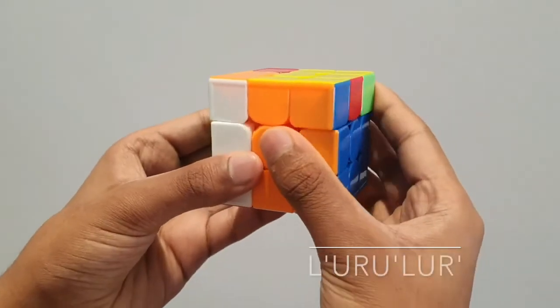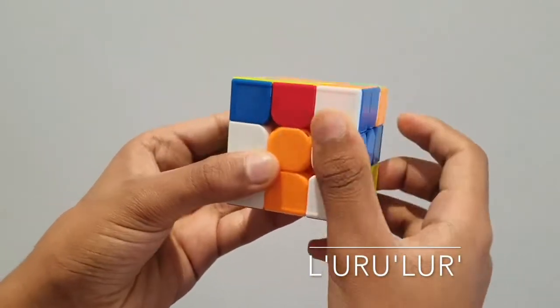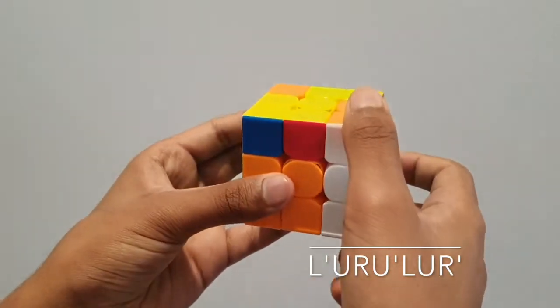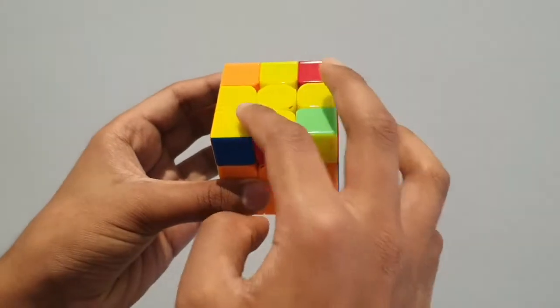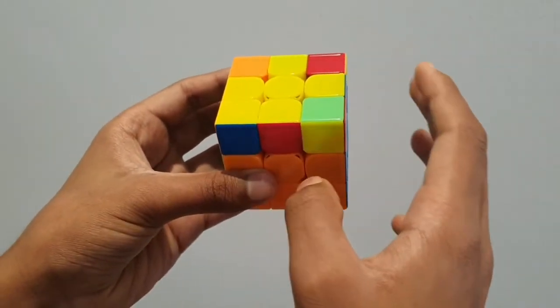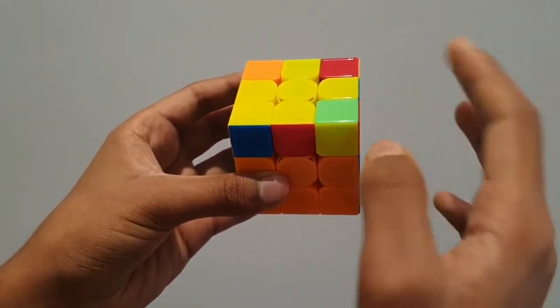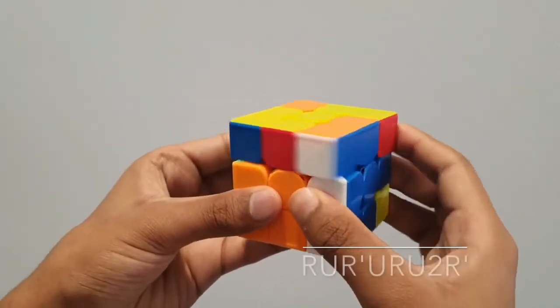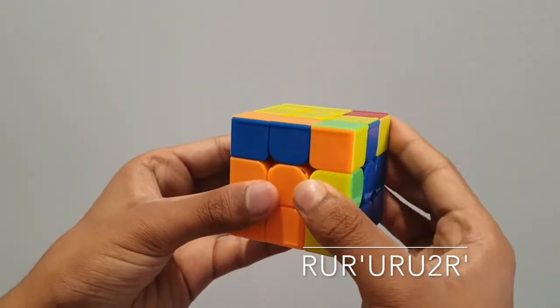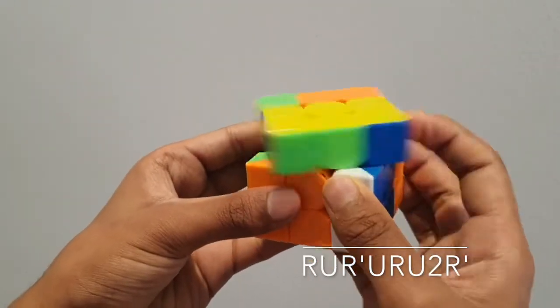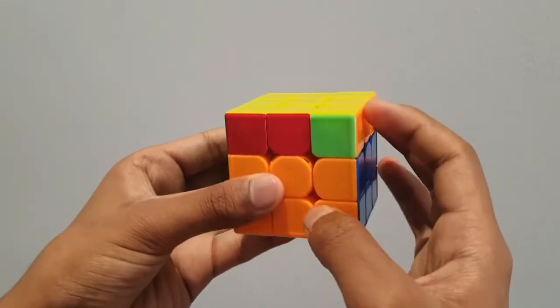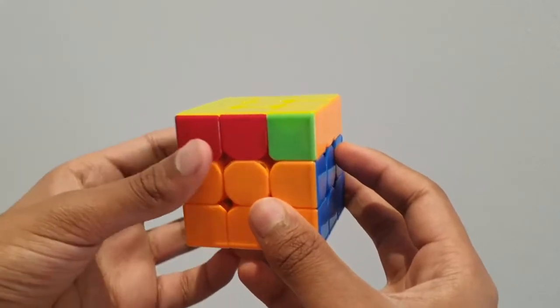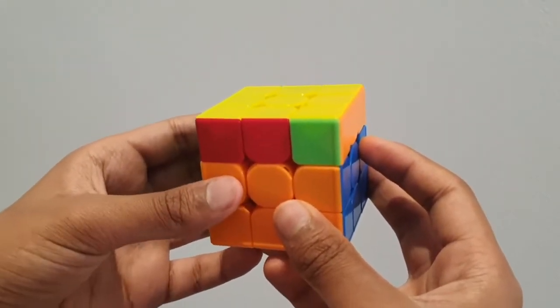It goes like this: L prime, U, R, U prime, L, U, R prime. Now you can see we have our fish, so this is just basically a cutout of our last algorithm. We're simply just putting this into our next algorithm. So now this is how it goes: R U R prime U R U2 R prime. You might have noticed that this algorithm was basically a few new moves along with our previous algorithm, so it's very easy to remember.